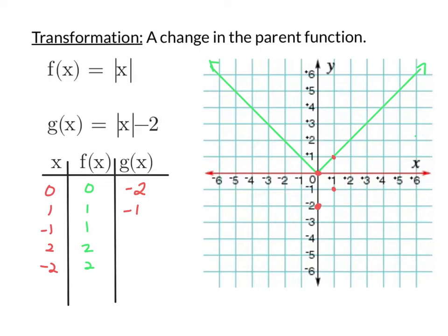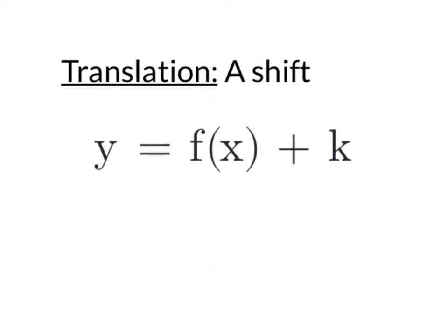For negative 1, 1 — the absolute value is 1. Now when we subtract 2, we're at negative 1. When x is 2, absolute value of 2 is 2, but now when we subtract 2, we're at 0 for both of these. So when x is 2, we've shifted down 2 units, and negative 2, we shifted down 2 units. Now when we start connecting all of our points, we see that we get the exact same shape — it's just that everything is shifted down 2 units. This is called a translation, and that's when we just take the exact same graph and shift it. So whenever we're adding k outside of the parent function, that's going to shift it up or down k units.